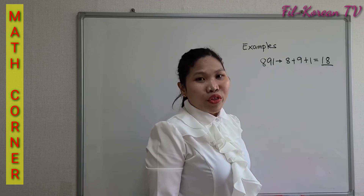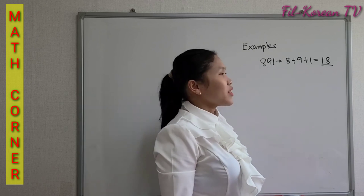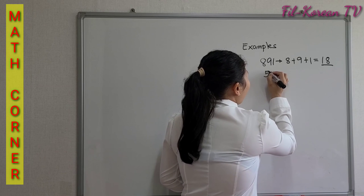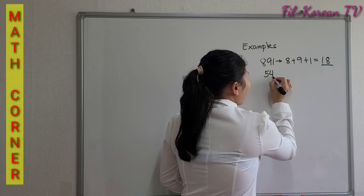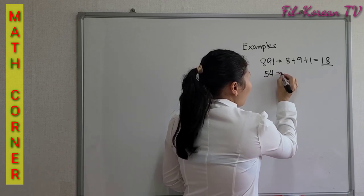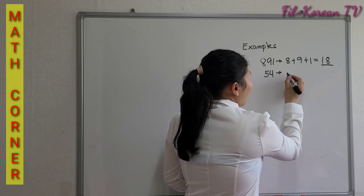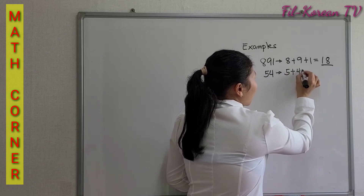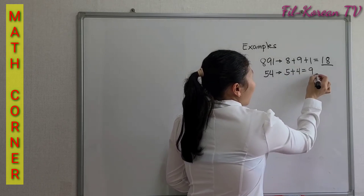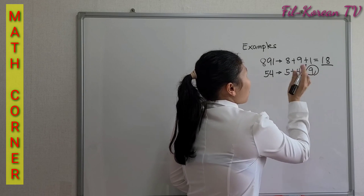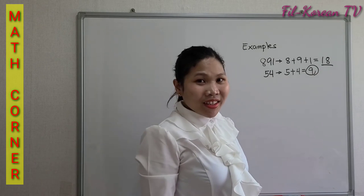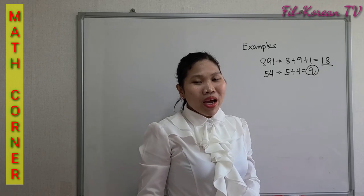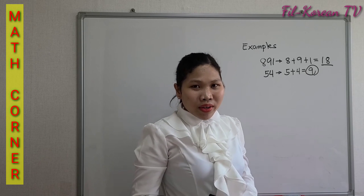Another example: 54. 5 plus 4 equals 9. 9 is a multiple of 9, so 54 can be divided by 9.